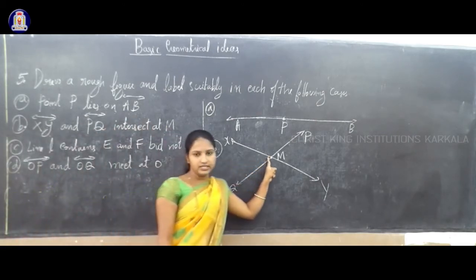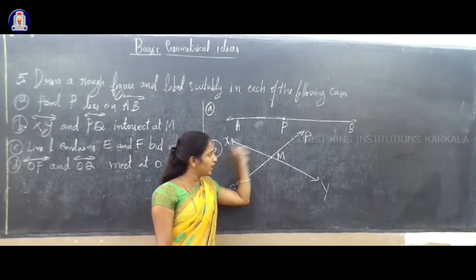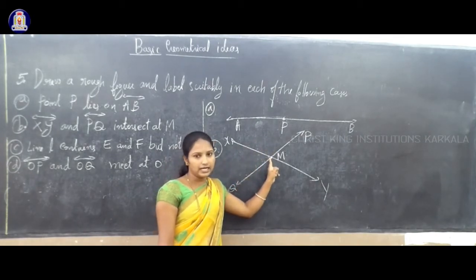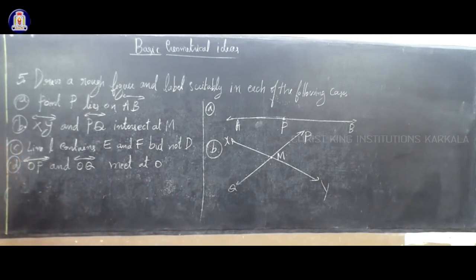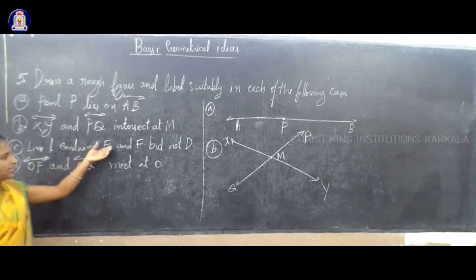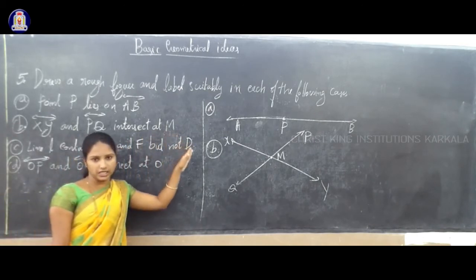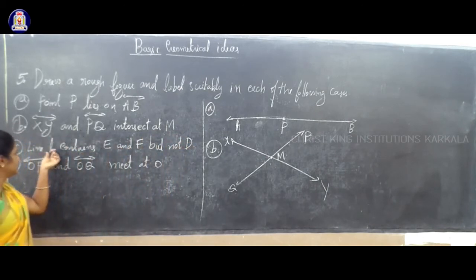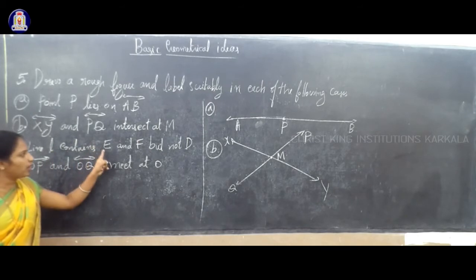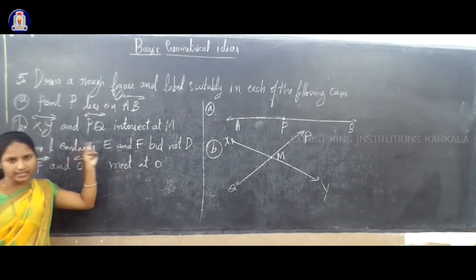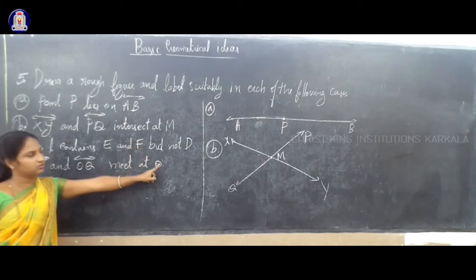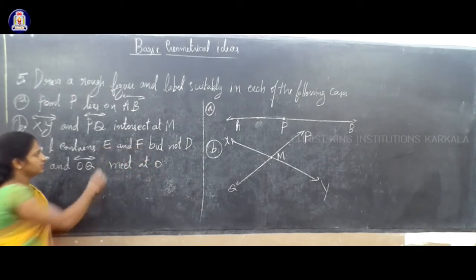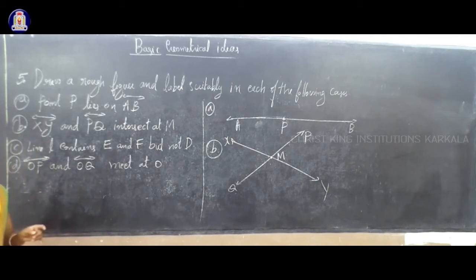So PQ and XY are intersecting at Y. The next question: line L contains E and Y but not D. One line L contains points E and Y. The line contains points E and Y but not D. You cannot consider point D on line L.